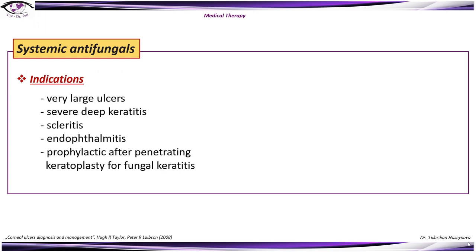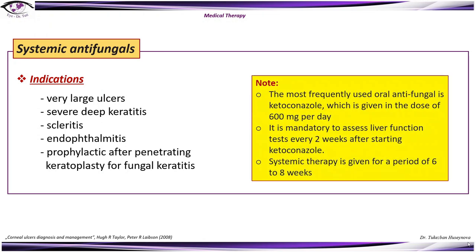Systemic antifungals are indicated for very large ulcers, severe deep keratitis, scleritis, endophthalmitis, and can also be used as prophylaxis after penetrating keratoplasty for fungal keratitis. The most frequently used oral antifungal is ketoconazole, given at 600 mg per day. Liver function tests must be assessed every two weeks after starting ketoconazole, and systemic therapy is given for six to eight weeks.